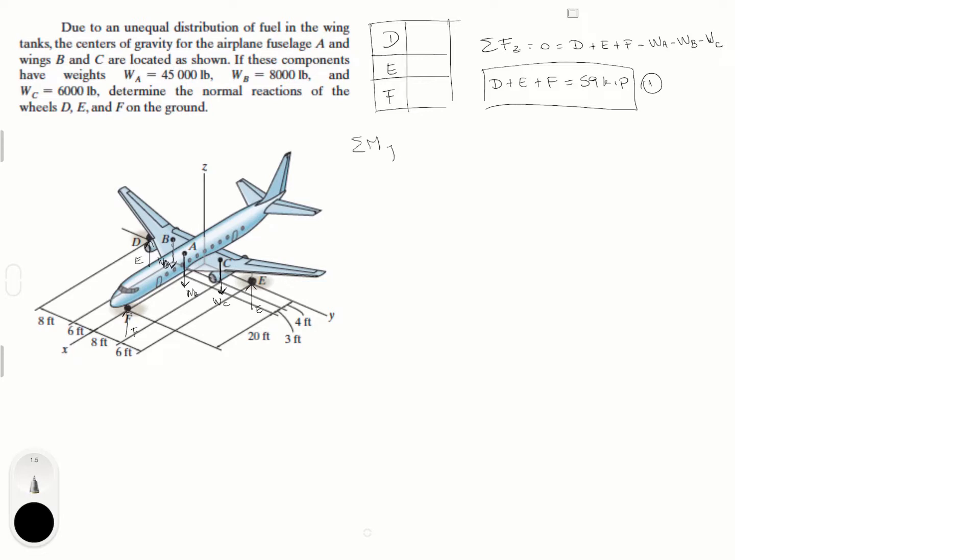Second one, I'm going to do the sum of the moments at Y is equal to zero. Why did I decide to do sum of the moments at Y? Because if you look at it, in the Y axis, you have the D and the E forces sitting, right? And if you do the sum of the moments at the Y, you automatically are canceling out D and E because they're sitting right at the axis. And this is going to be easy because you know all the other variables except F. So, you should be able to find F using sum of the moments at Y.